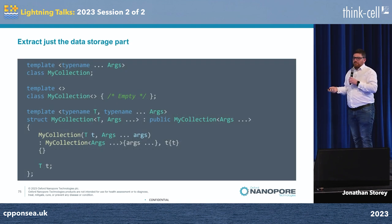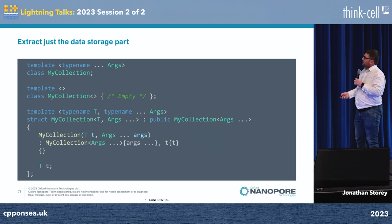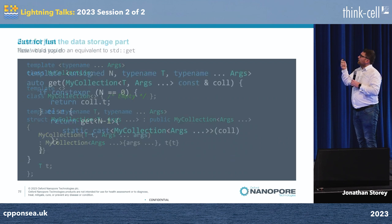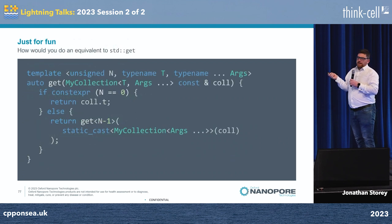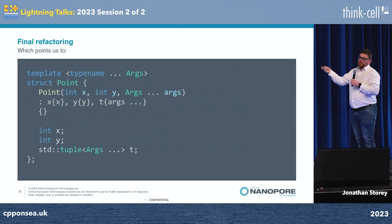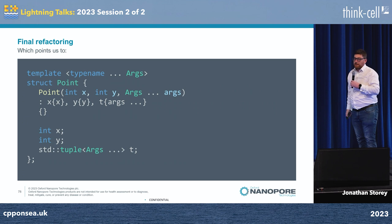Then we want to do some more refactoring: we extract just the data storage part, and before you know what's happening, you've got a tuple. You can do a standard get if you want. But to be honest, if you want to store multiple arguments of arbitrary type, just put a tuple in. Thank you.